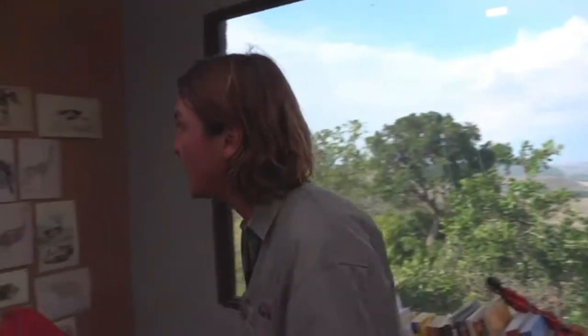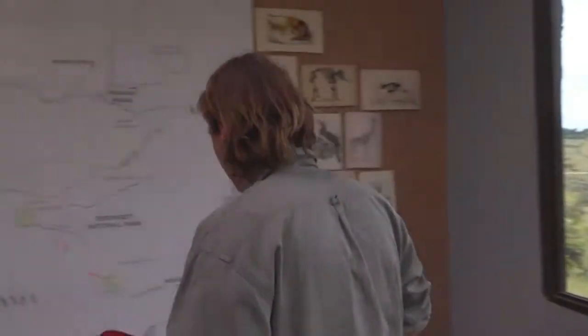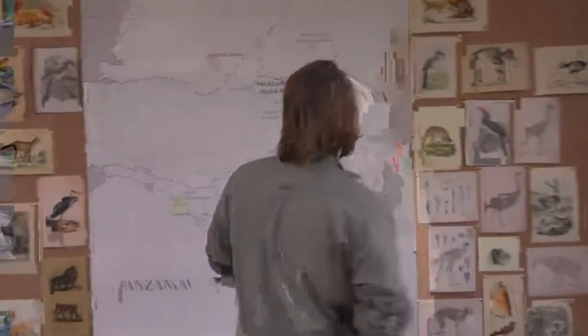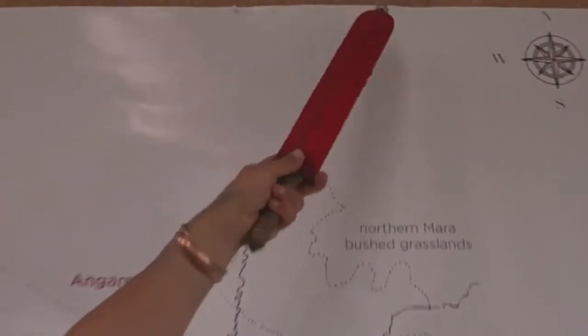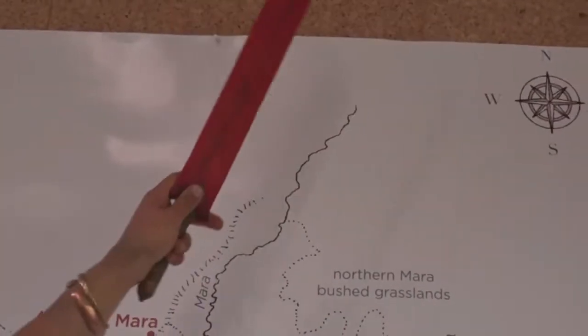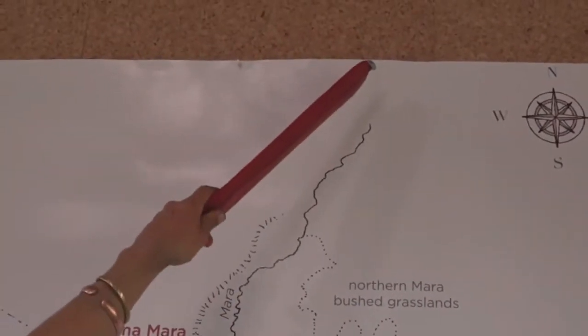A lot of you have been wondering about the Mara River and its history — where it goes and what it does. It sources in a swamp whose name I cannot pronounce, in the Mao Highlands up here.